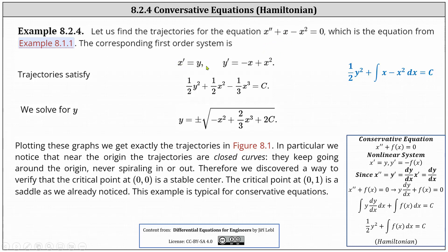So our system is x prime equals y and y prime equals negative x plus x squared. Now, the trajectories must satisfy the equation one half y squared plus the integral of f of x dx equals c, where in our case f of x is equal to x minus x squared. Therefore, the trajectories must satisfy one half y squared plus the integral of x minus x squared dx equals c. Integrating x minus x squared with respect to x gives one half x squared minus one third x cubed.